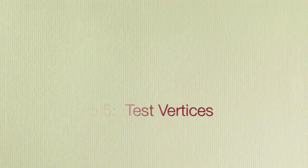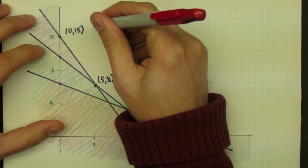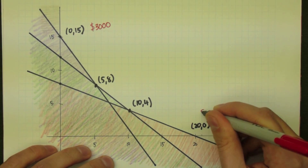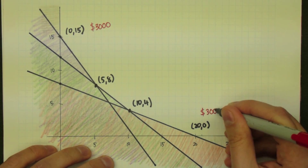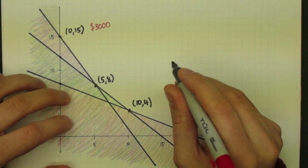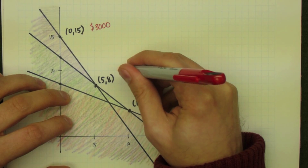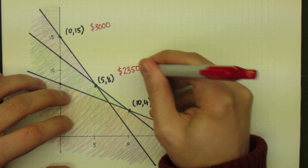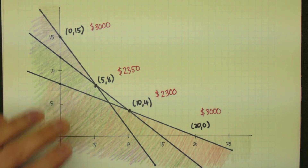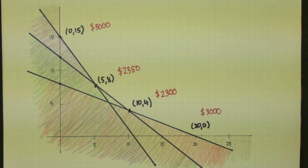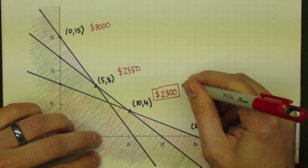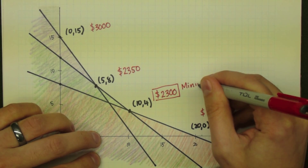Step 5: Test the vertices. We find the cost at each vertex by plugging the vertices into the objective function. The vertices (0, 15) and (20, 0) each give $3,000 as our cost. The vertex in the middle — 5 days for the East Factory and 8 for the West Factory — gives a cost of $2,350. The vertex at 10 and 4 gives a cost of $2,300. Out of these costs, the smallest is $2,300, which gives us our minimum cost.